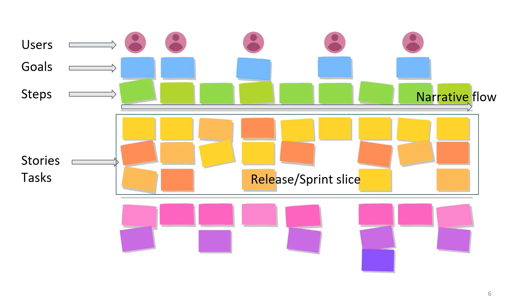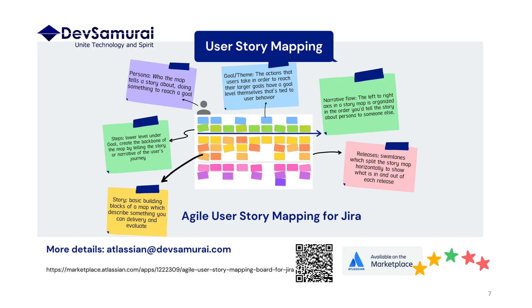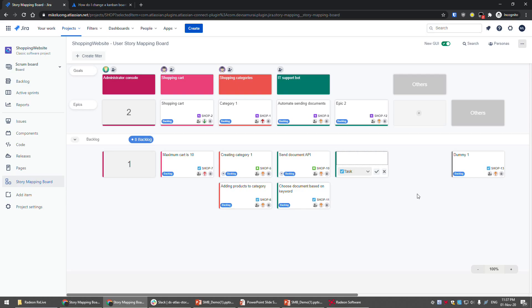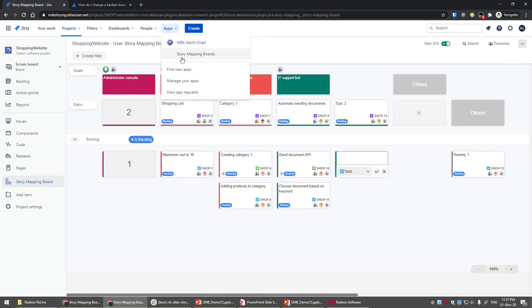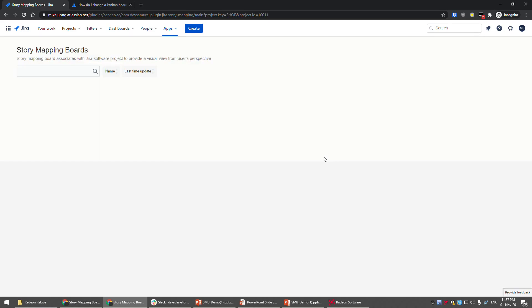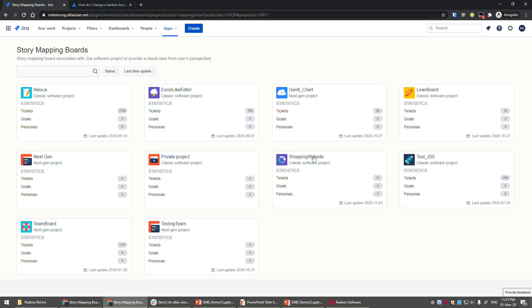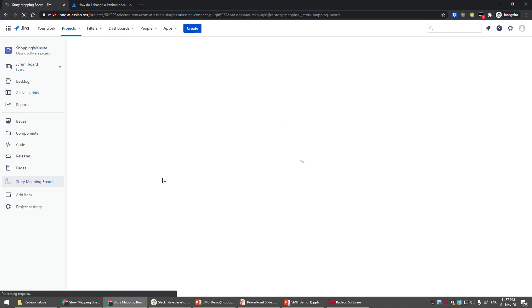These stories and tasks can be grouped into a release or sprint. To demonstrate a user story mapping board, I will use this plugin called 'Actual User Story Mapping.' This plugin will help you easily do your story mapping. You can access the board by clicking on the left side here, or by clicking Apps and choosing Story Mapping Board. It will display all the boards you have, and clicking one will lead you to that board.